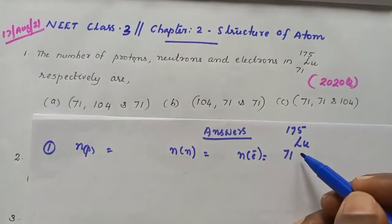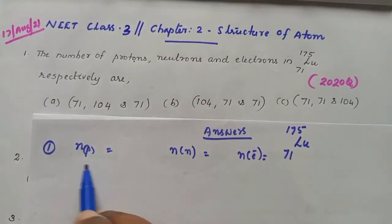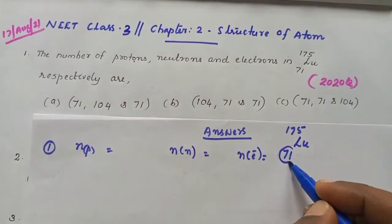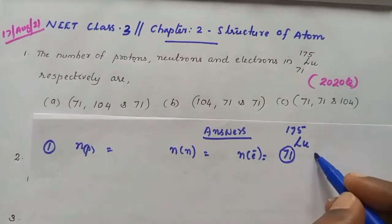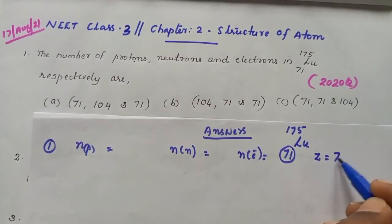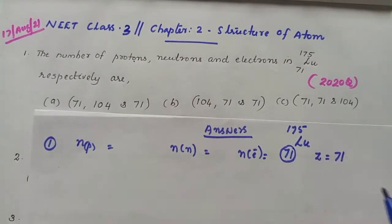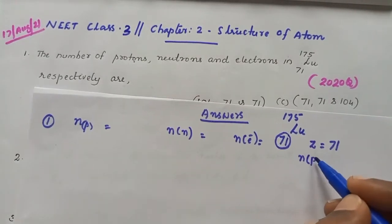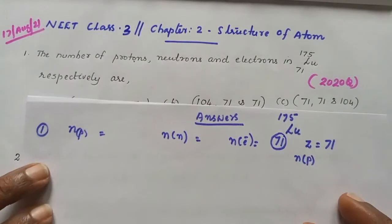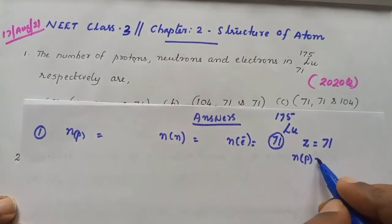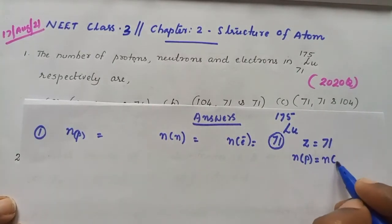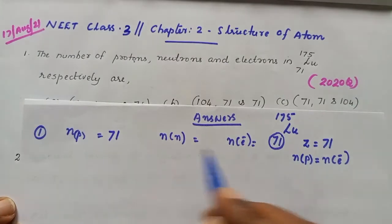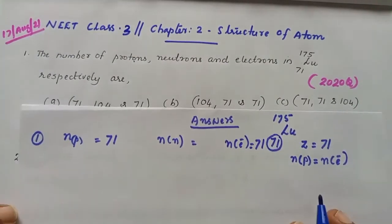From these two values we can calculate these three terms. We know that atomic number, denoted by Z, is equal to 71. Atomic number is the same as the number of protons, and number of protons is also equal to number of electrons. So, number of protons equals 71 and number of electrons equals 71.